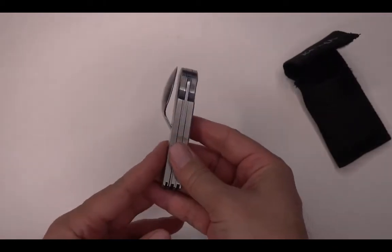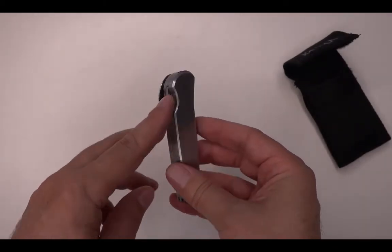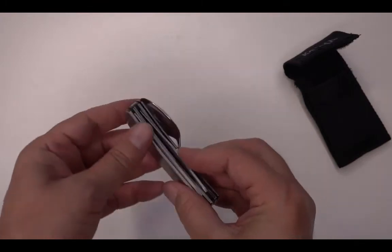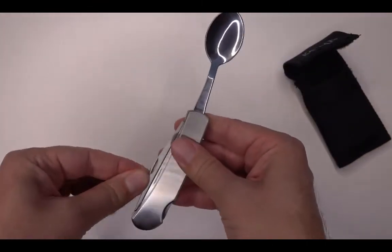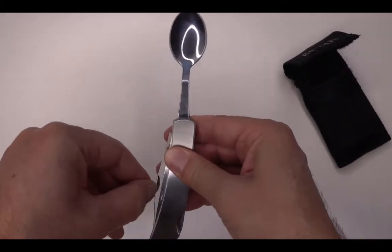So this pocket knife here is a spoon, a knife and a fork. Here you have the spoon, the knife and the fork.